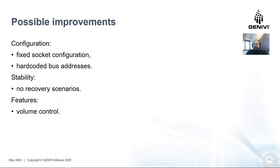So that was the actual demo. Some short-range improvements that we would like to introduce are to improve the configuration area. Currently we have socket configuration and bus addresses hardcoded inside the proof of concept, and it would be nice to have it configurable — the actual configuration should be derived from the audio policy and car zone policy configurations. We don't have many recovery scenarios, so we should also think about those in the future. Volume control is also a quite important topic — currently we don't have any volume handling in our proof of concept, and we would like to enable Android users to control the volume of external amplifiers or external clients.